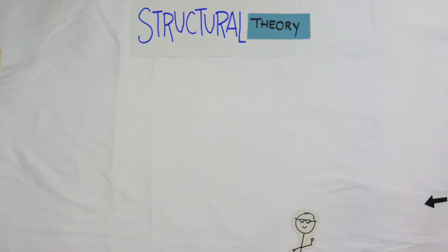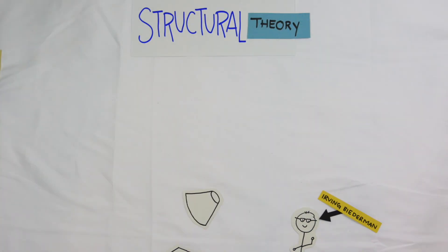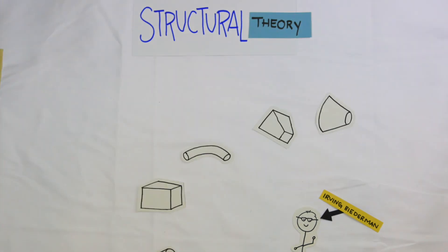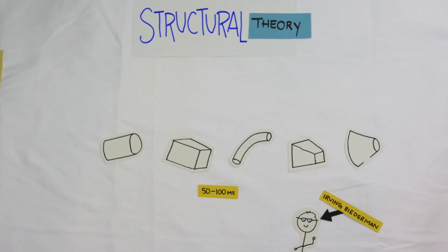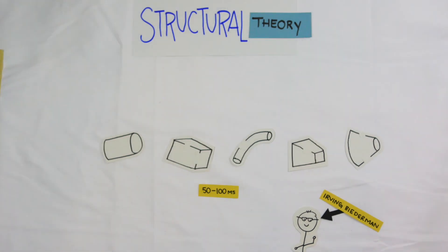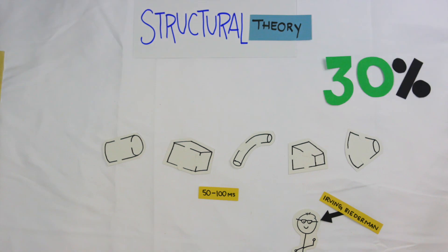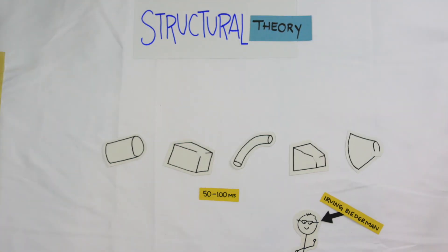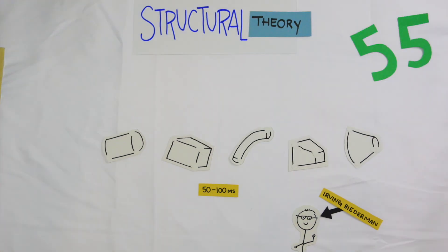The main study looking at structural theory was performed by Irving Biederman. He took five different geons and looked at the rate of recognition in combined geon objects when the object was flashed for 50 to 100 milliseconds, with either continuous line segments hidden producing a 30 percent error rate, or line intersections hidden producing a 55 percent error rate.